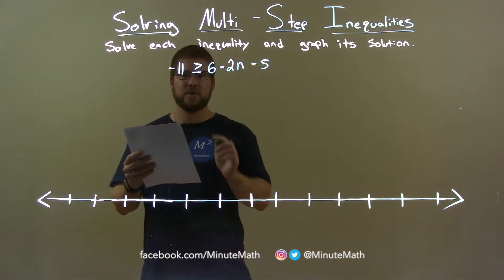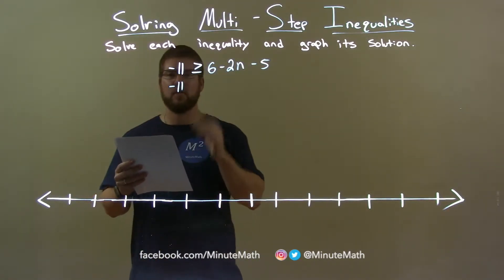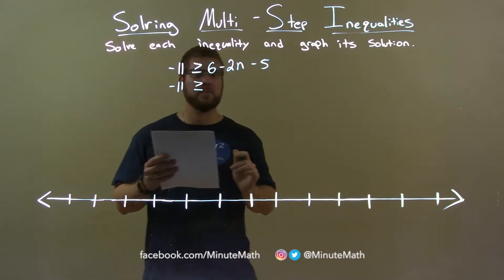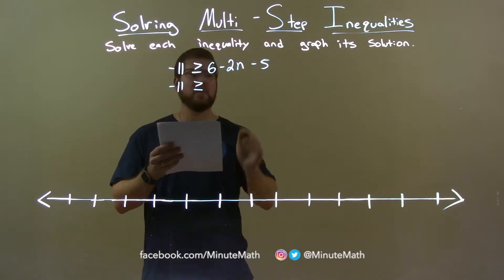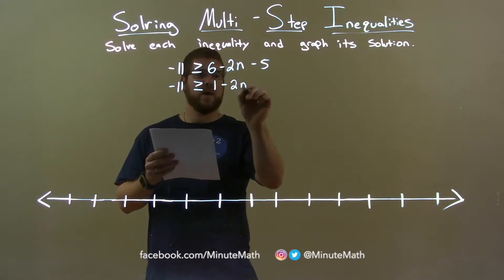Well, let's combine like terms. Negative 11 is by itself on the left and still greater than or equal to. The 6 and the minus 5 come together to be a 1. 1 minus 2n.